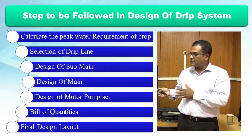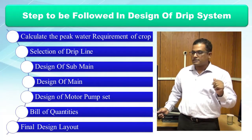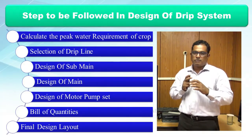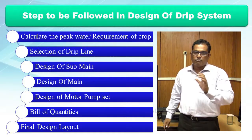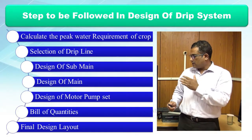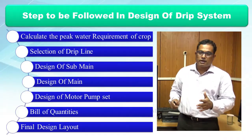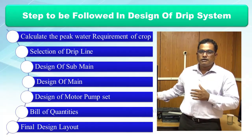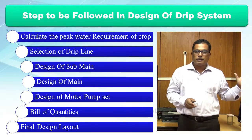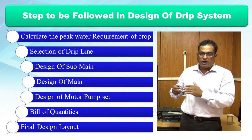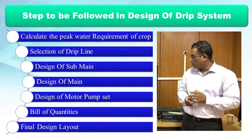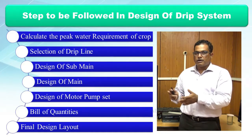Third is design of the sub-main: accounting for pressure losses to determine the diameter and pressure rating of the sub-main pipe. Sub-main pressure rating should be one class lower than the main pipe, since it carries less load. The main pipe carries the entire field's flow and must be robust, with higher diameter and higher pressure rating. Fourth is motor design: HP is again determined by the head and discharge relationship.